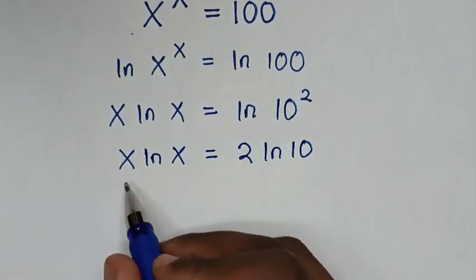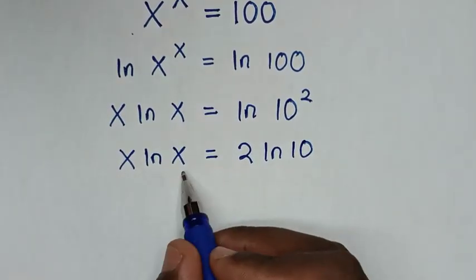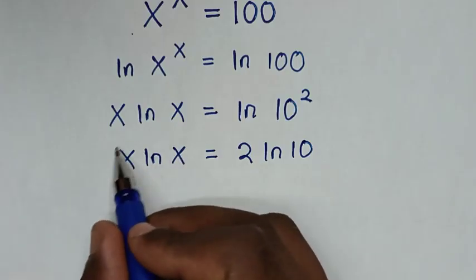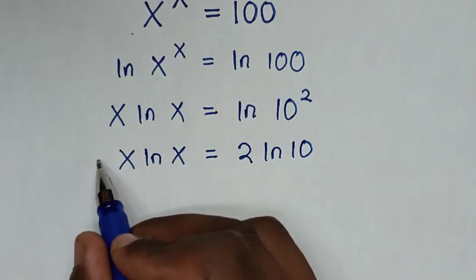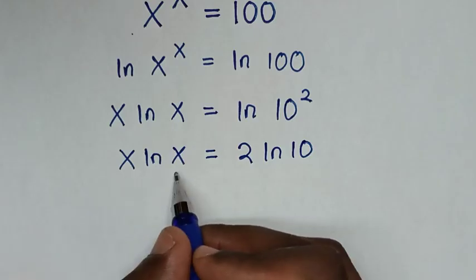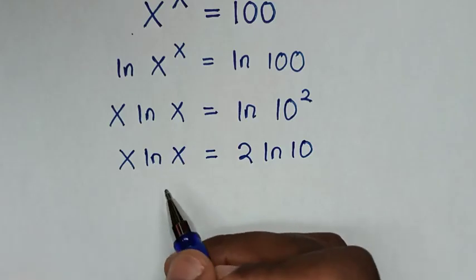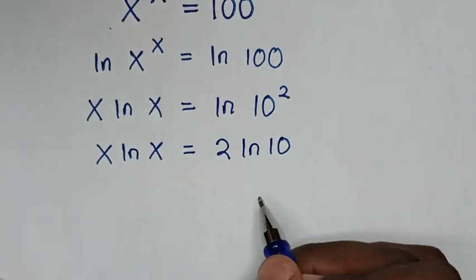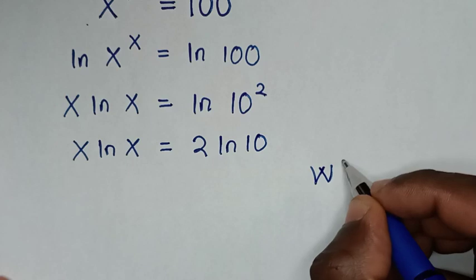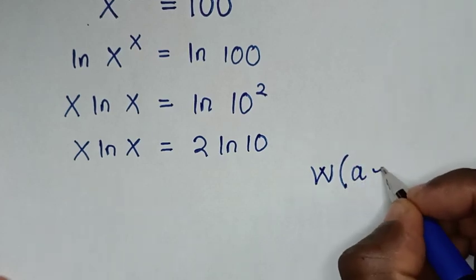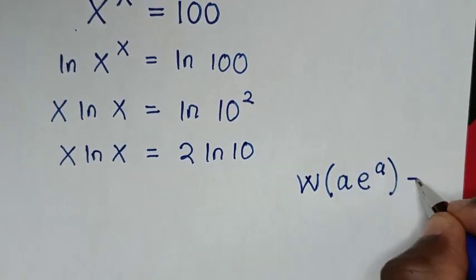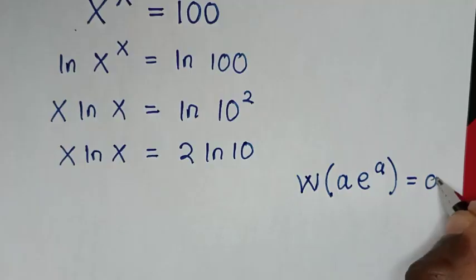Then from here, on the left side, x ln of x — in this part — we make it applicable by the Lambert W function. The Lambert W function is: W(A · e to the power of A) is equal to A.